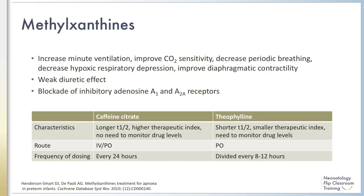Methylxanthines have been the pharmacologic treatment of apnea of prematurity for decades. This class of medication has multiple effects on respiration, including increased minute ventilation, improved CO2 sensitivity, decreased periodic breathing, decreased hypoxic respiratory depression, and improved diaphragmatic contractility. These drugs also have a weak diuretic effect and may improve lung compliance.